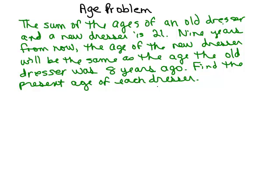What's a little different about this problem is that there are really three time frames. Right now their ages add up to 21. Then it talks about something about the new dresser nine years from now, and it's also discussing the old dresser eight years ago. So there are three different time frames in here.